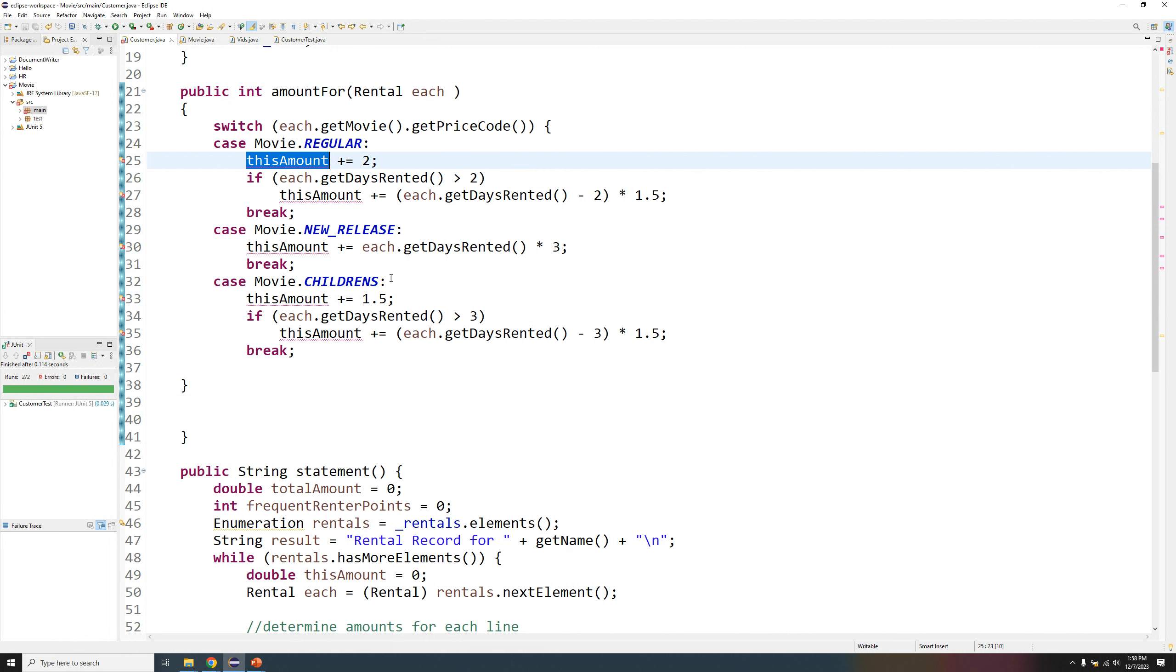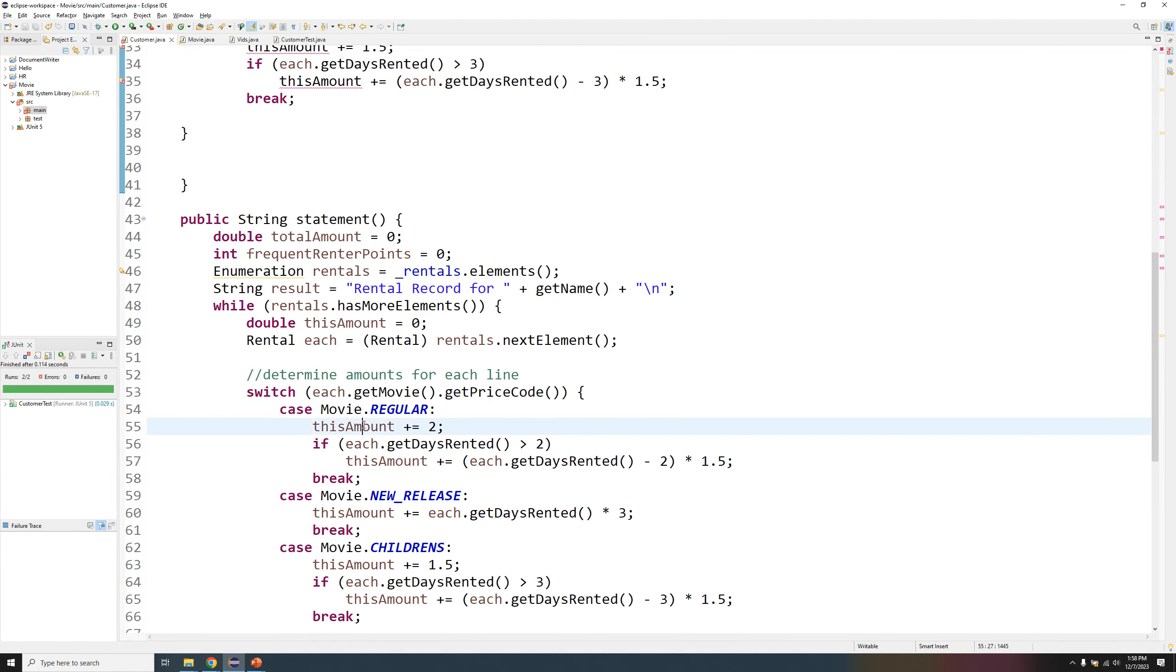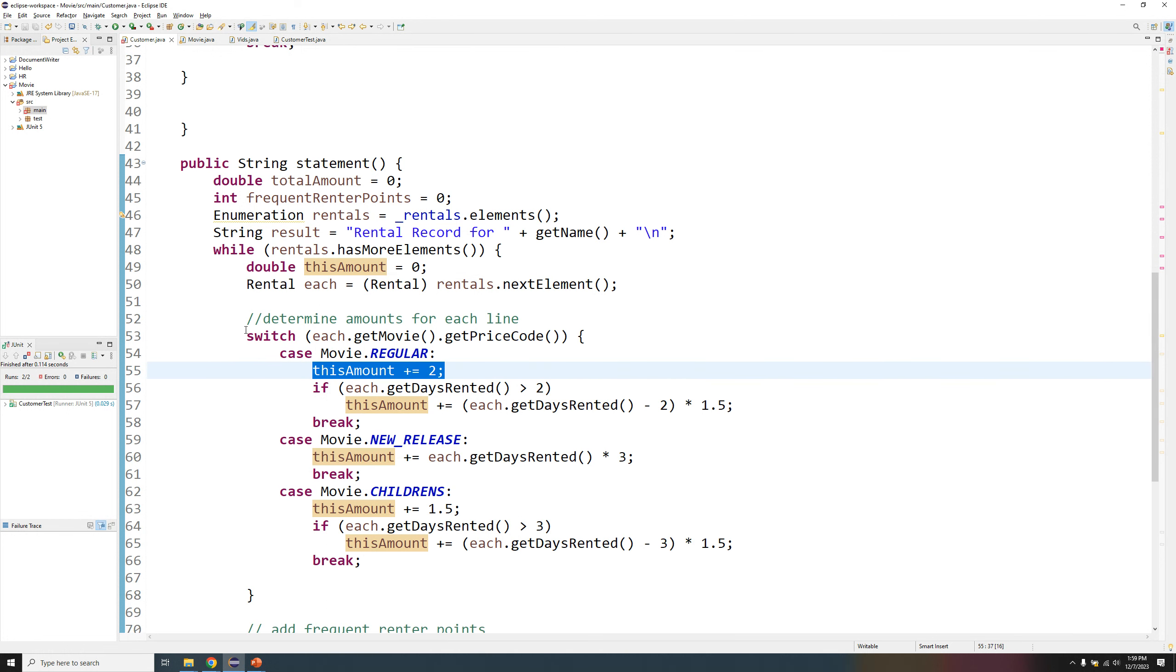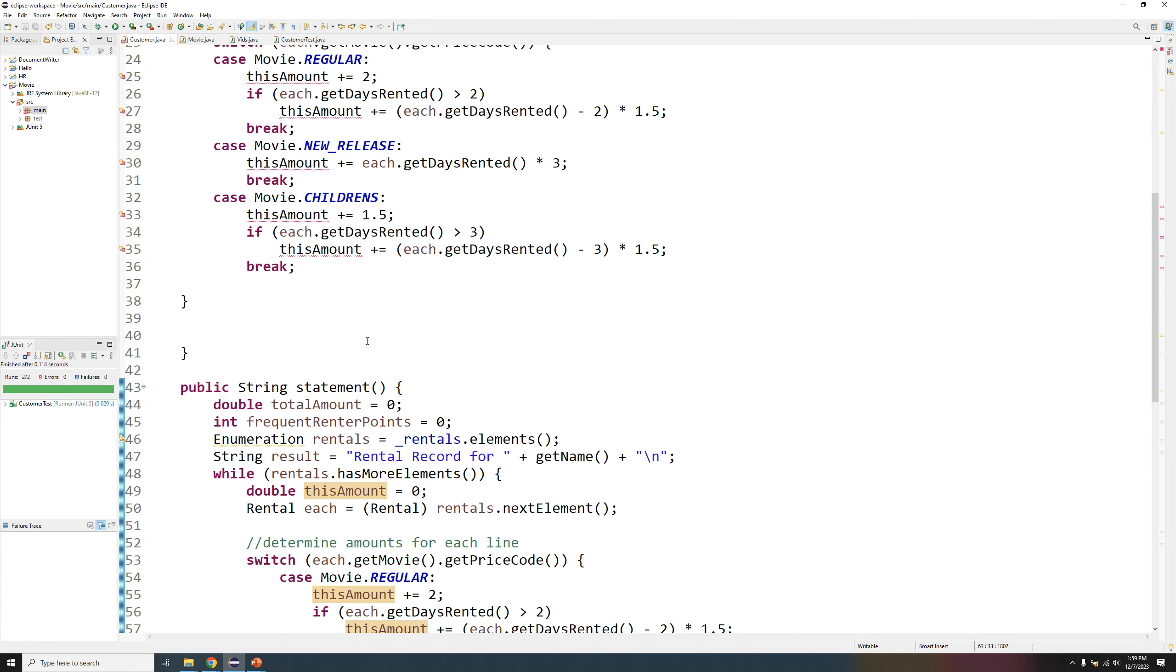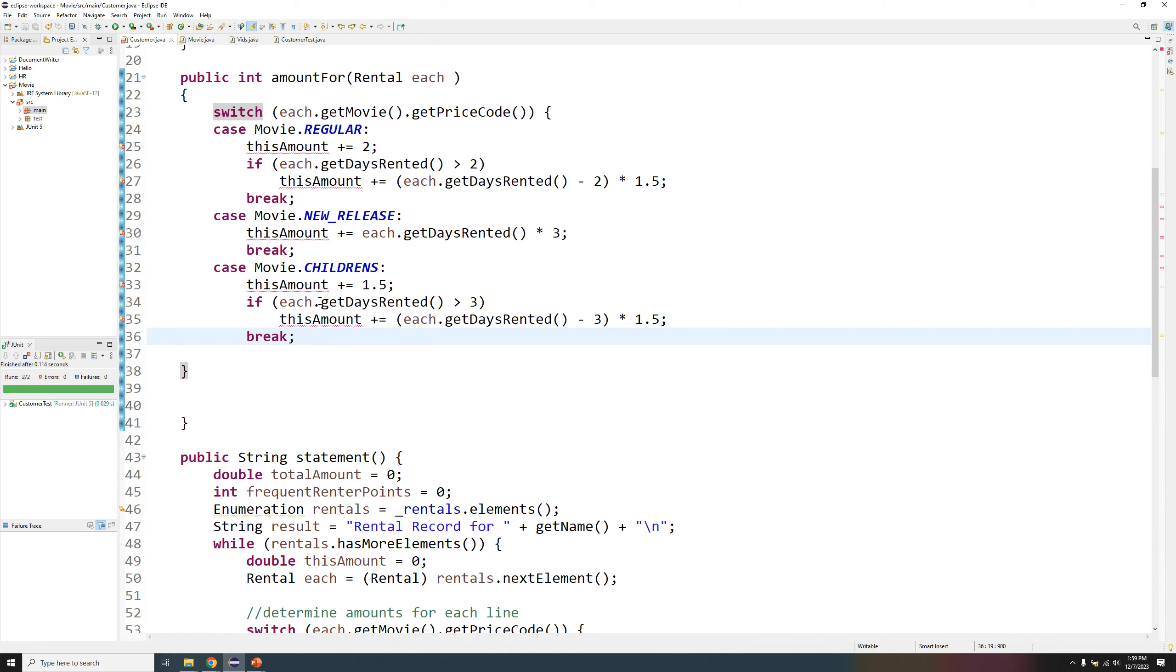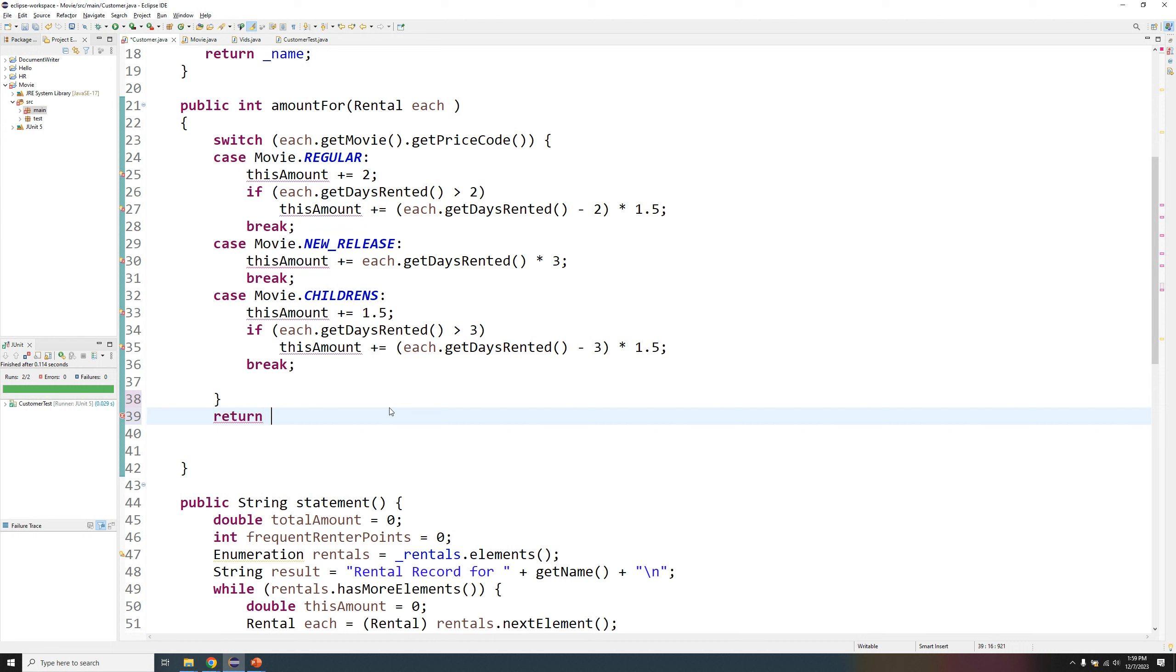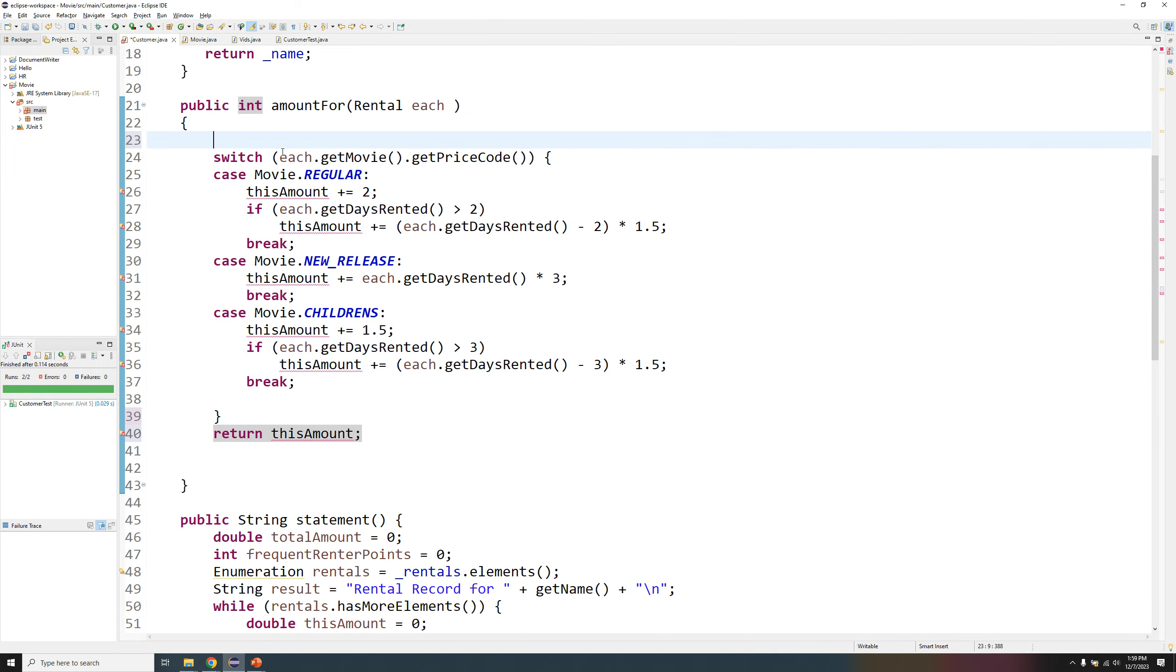And also another parameter, this amount. Should I be passing this amount to here? Let's look at here. This amount, it's a local variable over here, and this amount is just updated at the end of the switch statement. So looks like I should be returning this amount at the end. This is not greatly formatted, I will do this. And I will return this amount, but this amount I didn't create it yet. So I will just create here this amount and initialize it to zero.